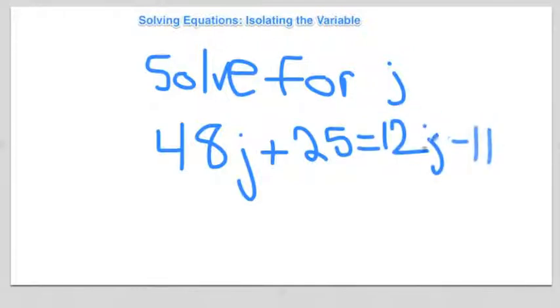You can subtract 12j from both sides, so you're going to get 36j plus 25 equals negative 11.